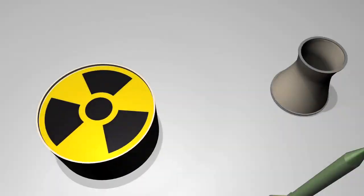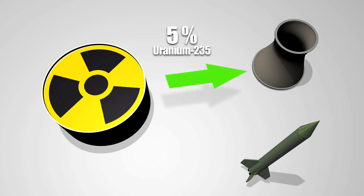To generate power, uranium is enriched only to 5%. To make a nuclear bomb, it must be enriched to at least 90%.